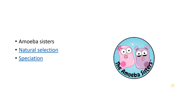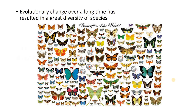A couple of videos — you might have watched one on natural selection already, but the Amoeba Sisters have done a great video on speciation as well. So here's one of your first definitions in the spec: evolutionary change through natural selection has resulted in a great diversity of species. Here are some of the butterflies of the world — lots of different sizes, colours, and shapes — and natural selection has brought this on. And speciation means that these are now different species.